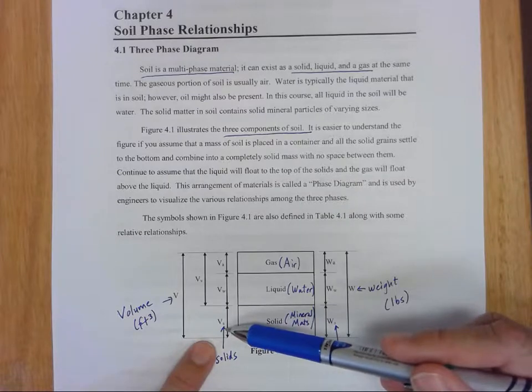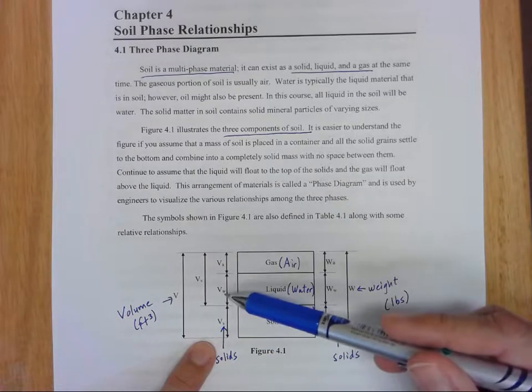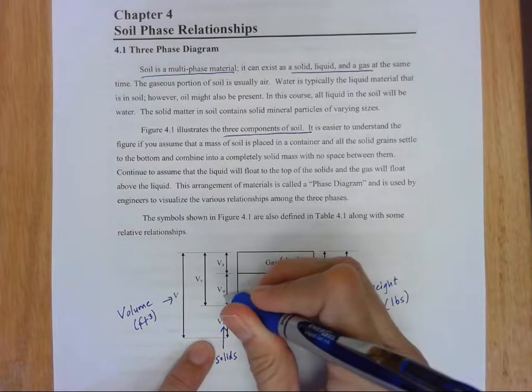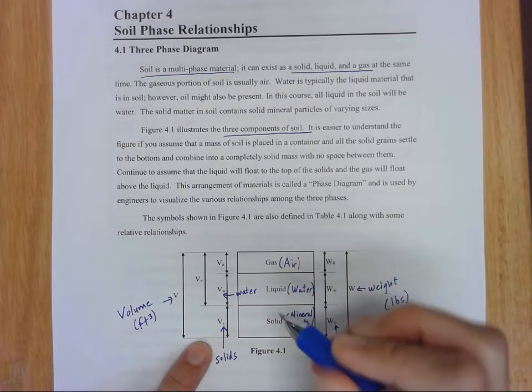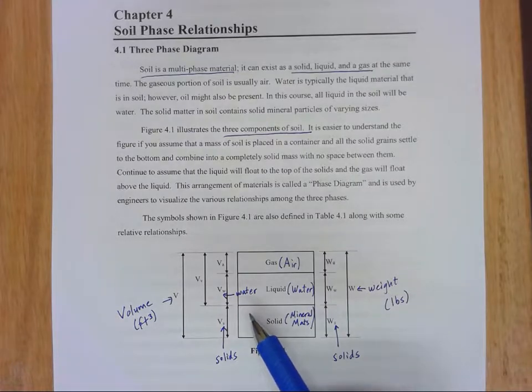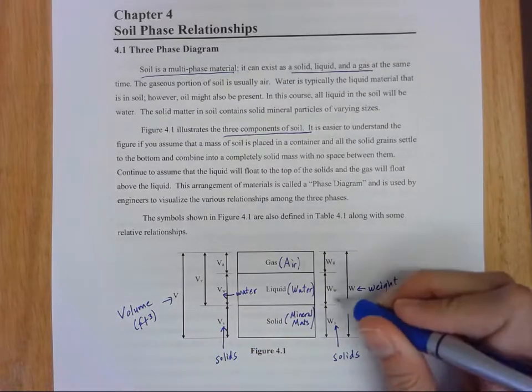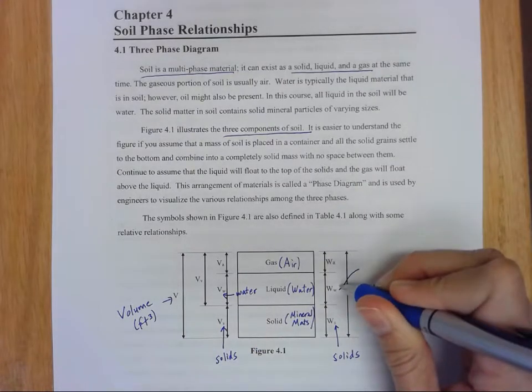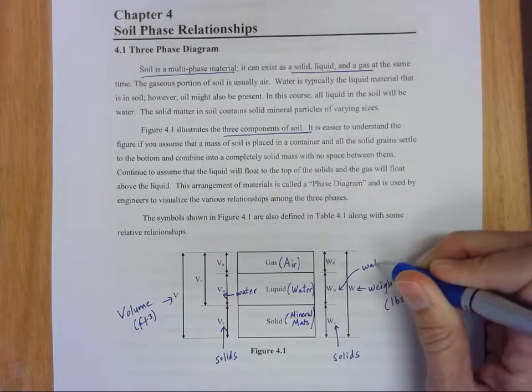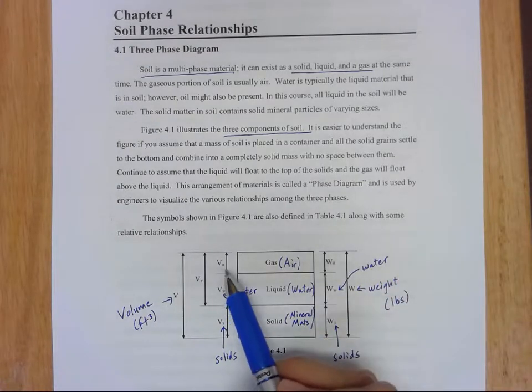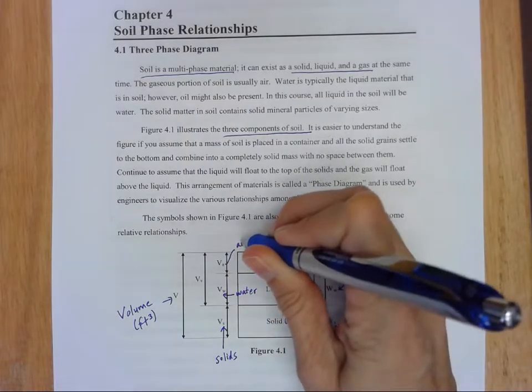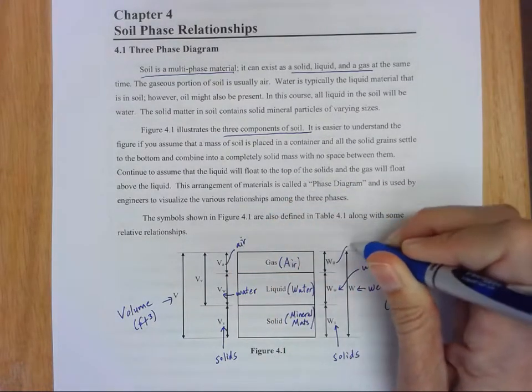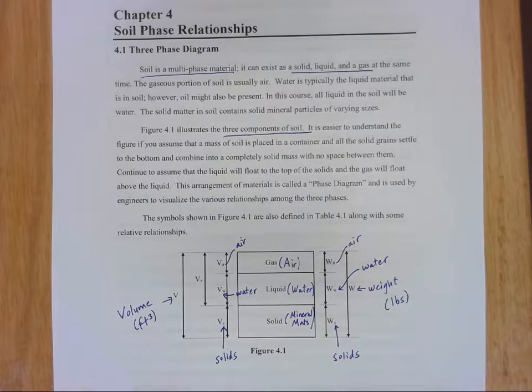So we have a volume of the solids here, a volume, this little w means water. Even though this is the liquid phase, we're just going to assume that that liquid is always water in this case. So here's our weight of the water. And then the small a, that's our gas phase, that's going to stand for air.